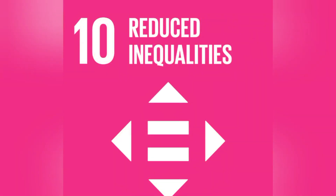Goal number 10, to reduce inequality. Outcome targets: adopt fiscal and social policies that promote equality, improve regulations of global financial markets and institutions, enhance representation for developing countries in financial institutions. Some of the implementation targets: encourage development assistance and investment in least developed countries, reduce transaction costs for migrant remittance.